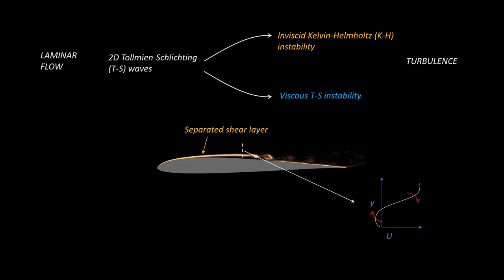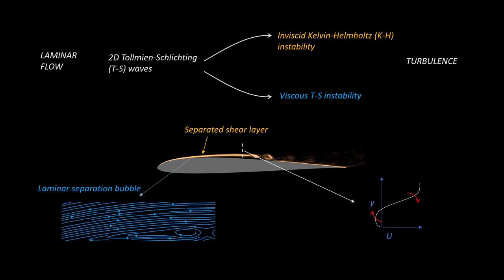In addition, viscous TS instabilities develop in the separated flow beneath the shear layer within a laminar separation bubble. This offers an alternate path to transition to turbulence.